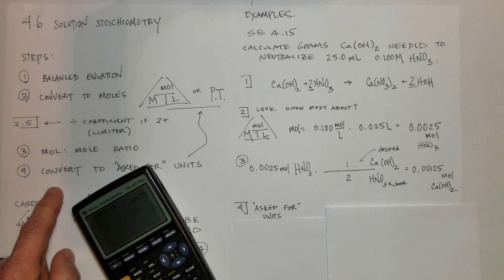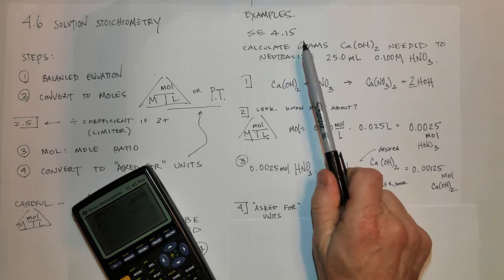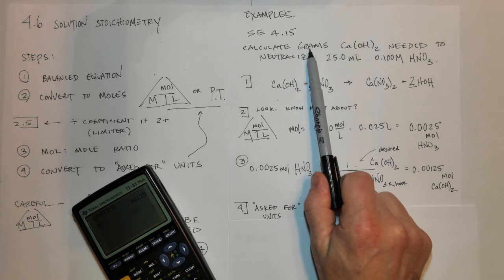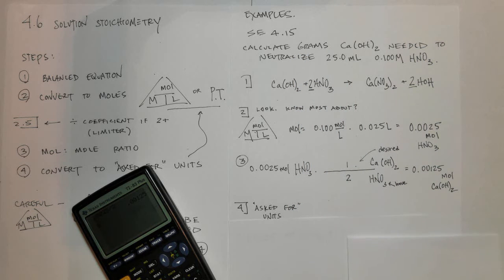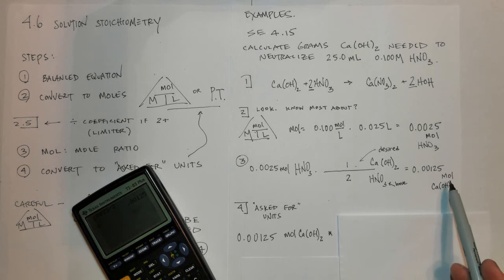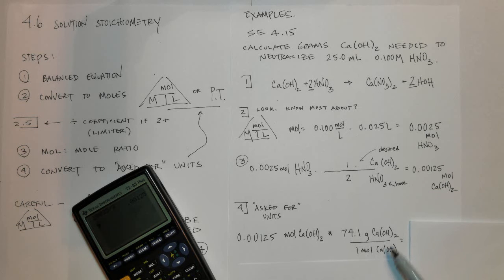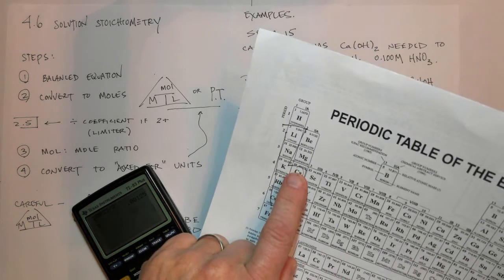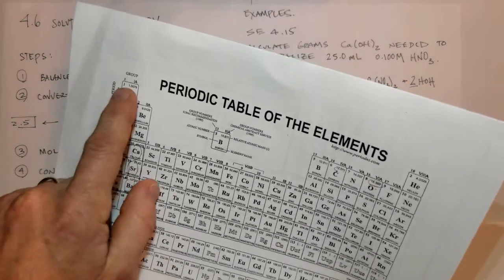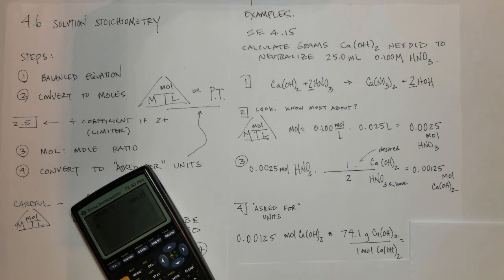The last step, step four, is to convert to the asked-for units. The problem asks for grams of Ca(OH)₂, so we take our moles of Ca(OH)₂ and convert to grams. Put moles in a position where it cancels and grams as the new units. Add up calcium (40) plus 2 oxygens and 2 hydrogens (hydrogen is 1), which adds up to about 74 grams per mole. 0.00125 times 74 gives 0.0926 grams of Ca(OH)₂.